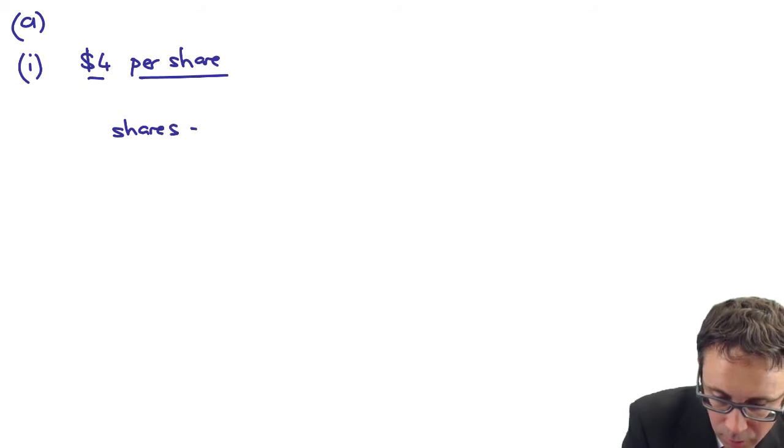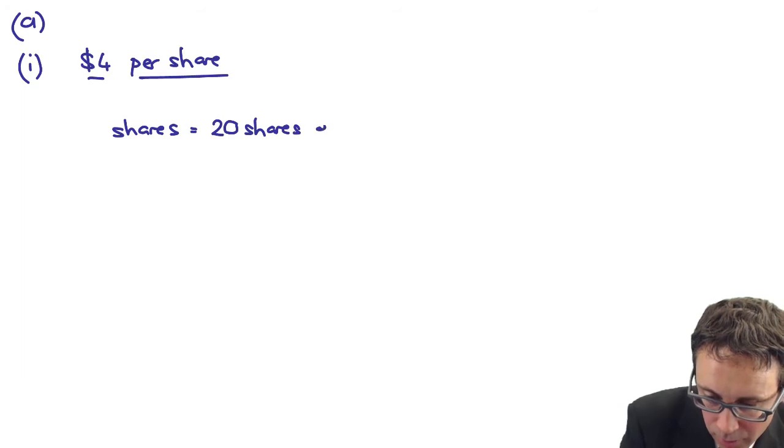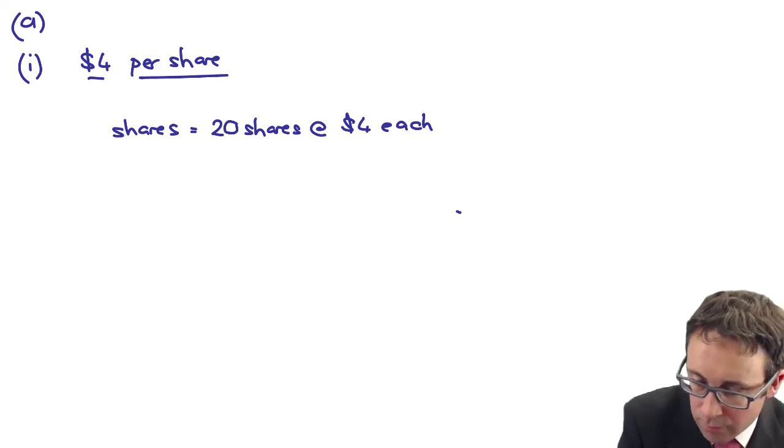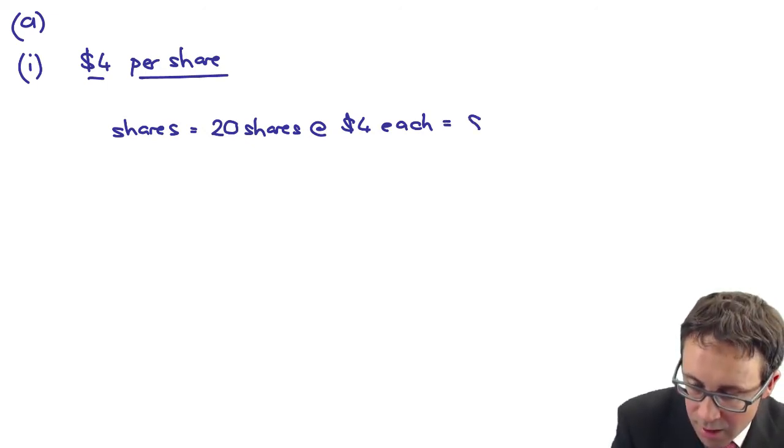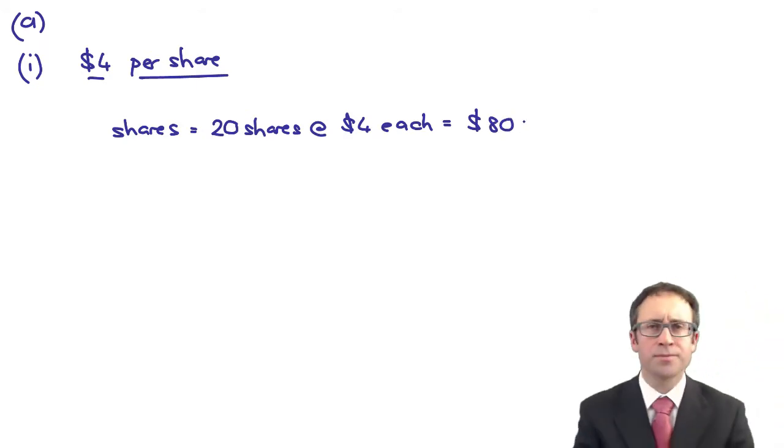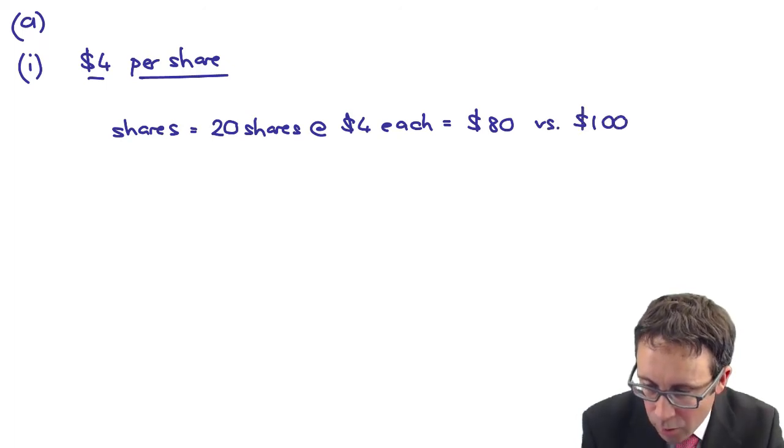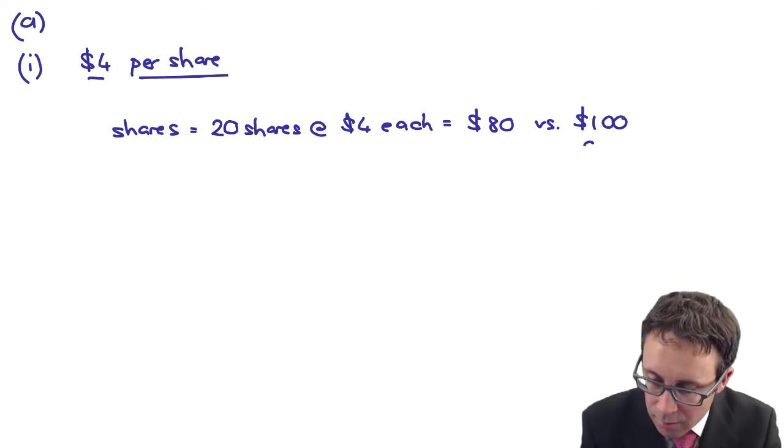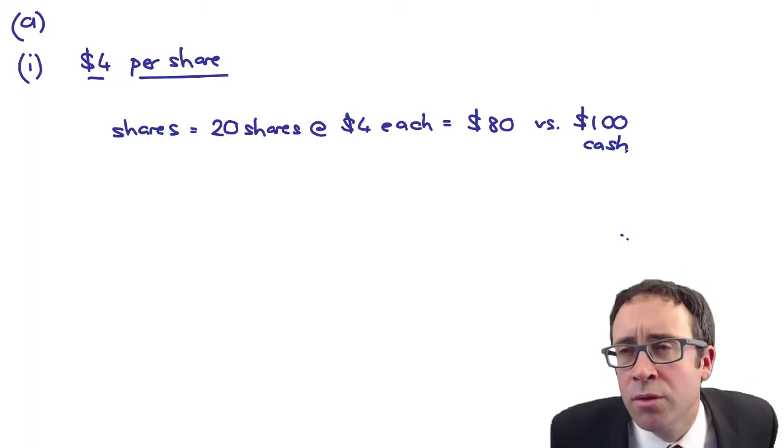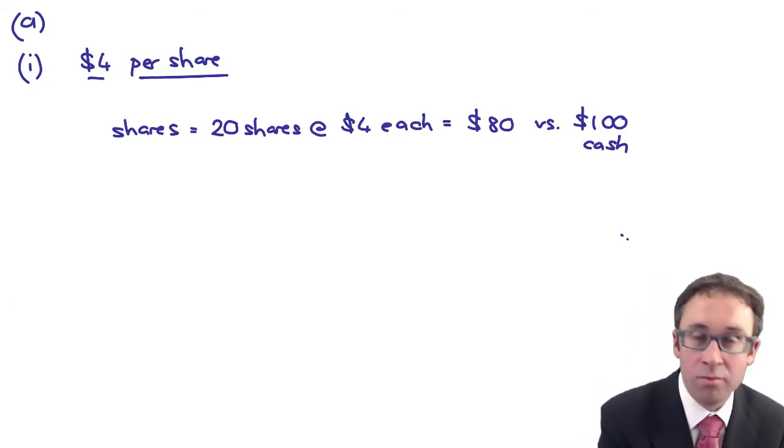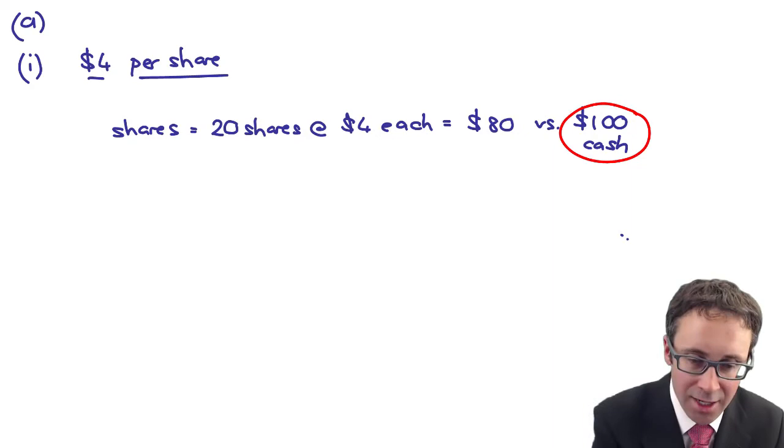Which gives me $80 versus the $100 which is there for your cash. Simple decision, isn't it? What would the shareholders or the debenture holders, the convertible debenture holders do? Would they take the shares or would they take the cash? Which one's worth more? You'd take the cash, wouldn't you?